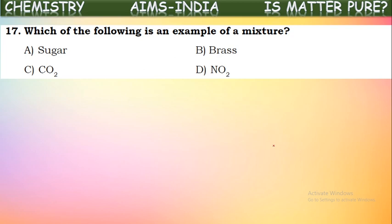Which of the following is an example of a mixture? Sugar is a pure substance — a single kind of molecules, so it is a compound. Brass is an alloy, and an alloy is a mixture formed by mixing two or more metals. Brass is made from copper and zinc mixed in the molten state, so brass is a mixture. Carbon dioxide and nitrogen dioxide are compounds. So brass is the correct answer.